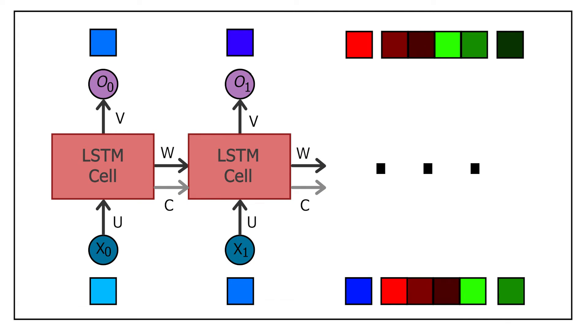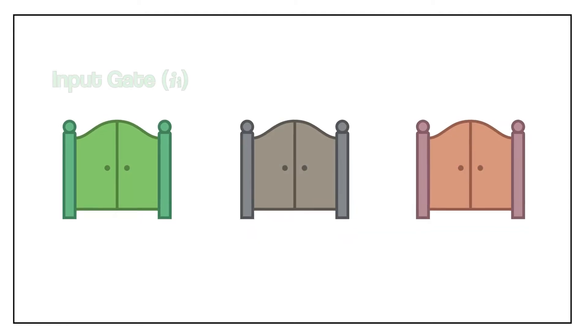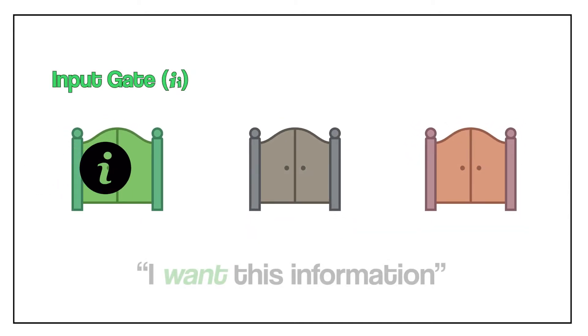LSTM networks were designed to mitigate the vanishing and exploding gradient problem. Apart from the hidden state vector, each LSTM cell has this cell state vector we just talked about. At each step of our RNN, the next LSTM cell can freely handle the information. This is done using three gates. The input gate decides if it wants to accept the information from the previous cell.